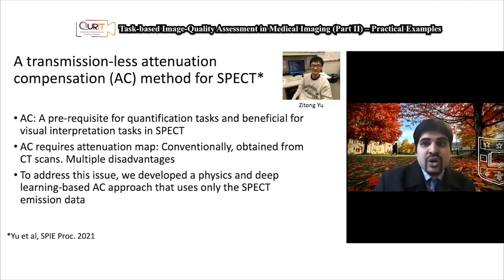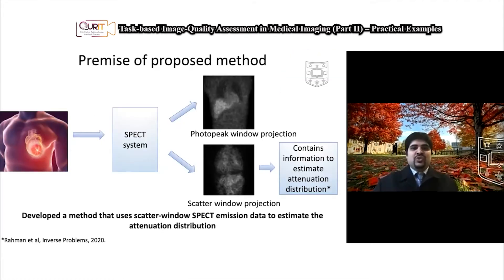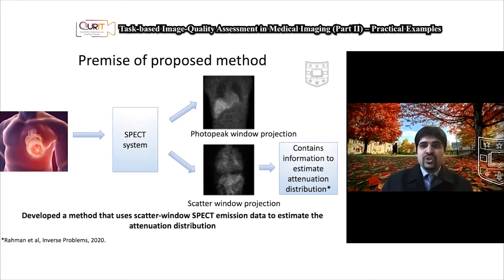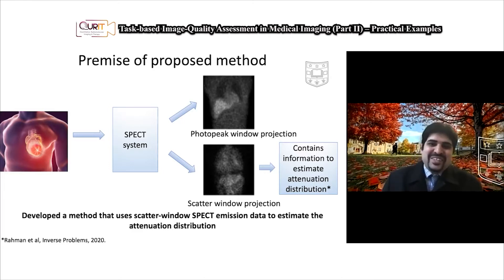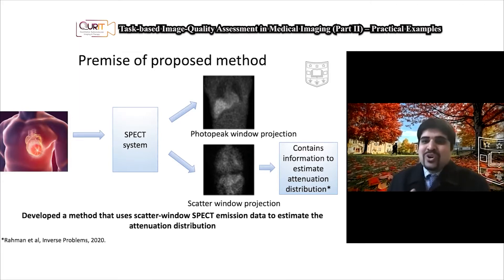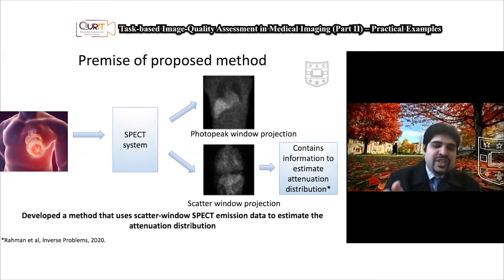In a SPECT system we obtain data in the photopeak window — photons acquired in a certain photopeak window, for example in technetium this would be 120 to 154 keV. This projection contains primarily unscattered photons, but also scattered photons. Then we have scatter window data, which primarily consists of photons that have been scattered. This data is often thrown away and discarded, but attenuation in SPECT is primarily due to Compton scatter — so these scattered photons may actually contain information to estimate the attenuation distribution.